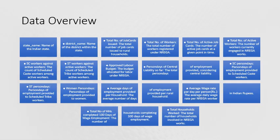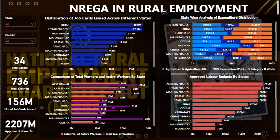We also examine how data is relevant to policymakers in assessing the scheme's impact. The data overview includes fields such as state name, district name, number of job cards, number of workers, number of active workers, and average wage, among other parameters.